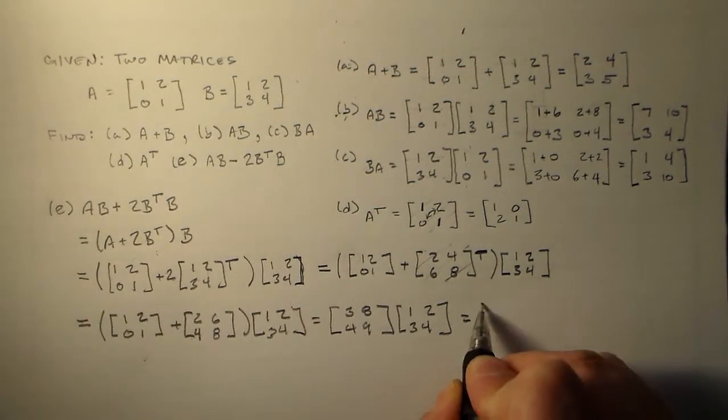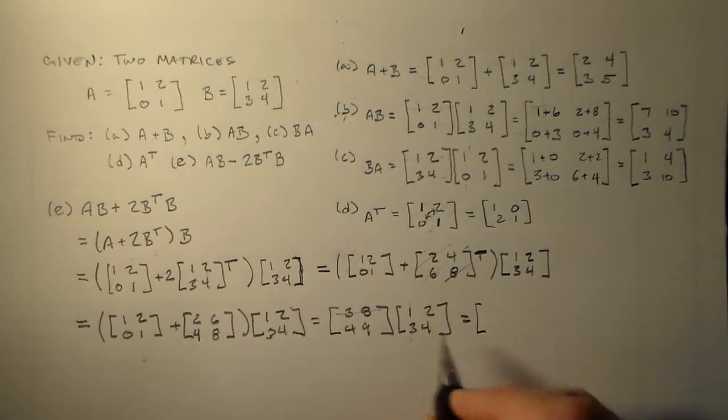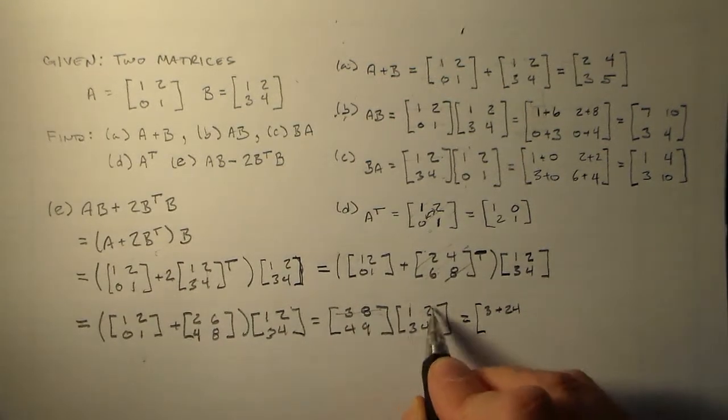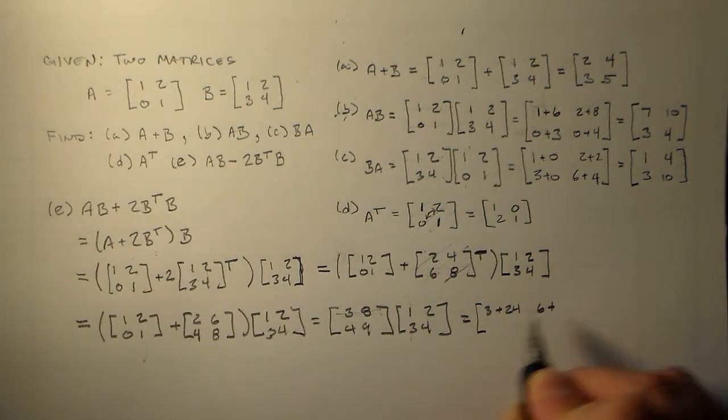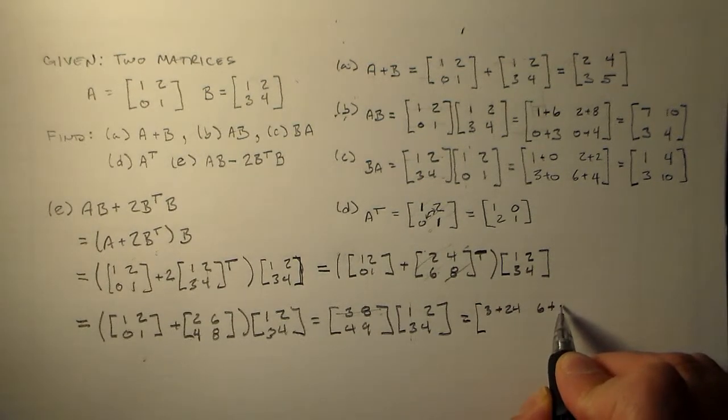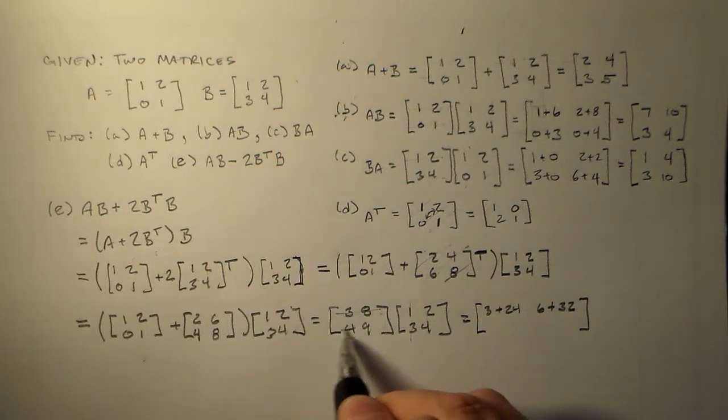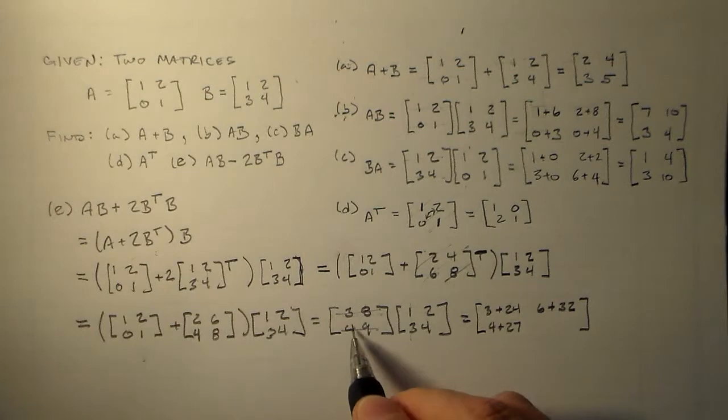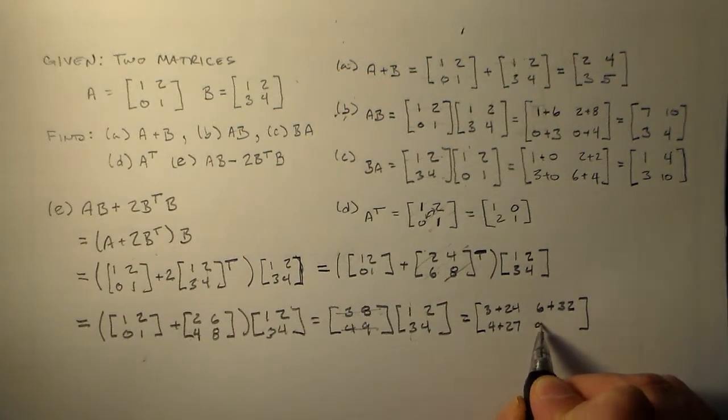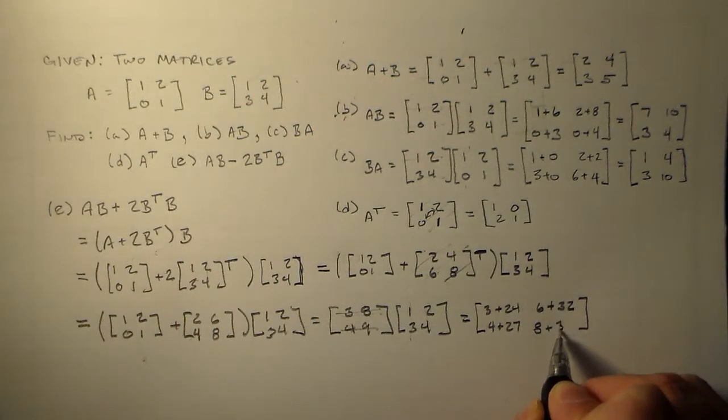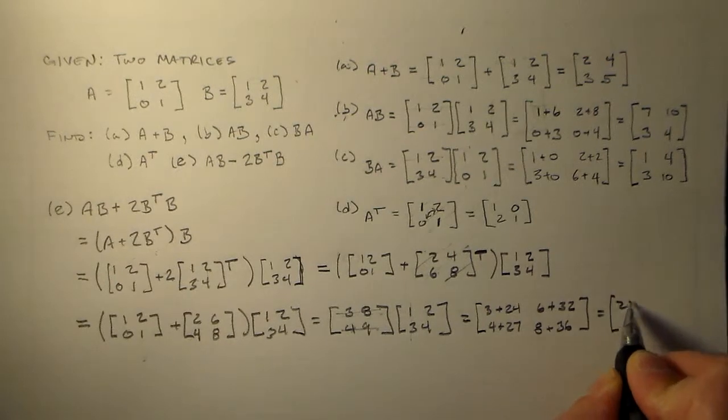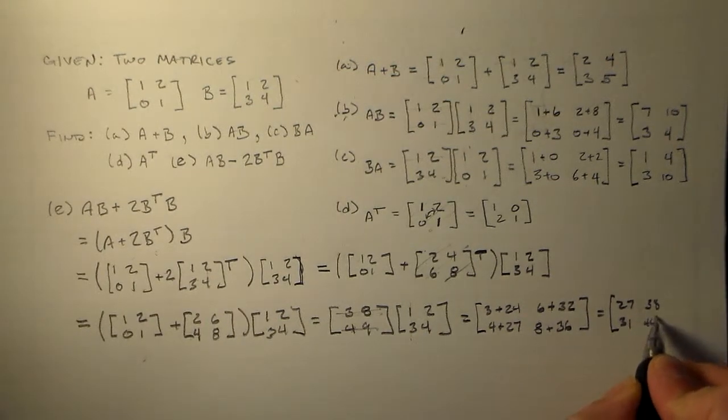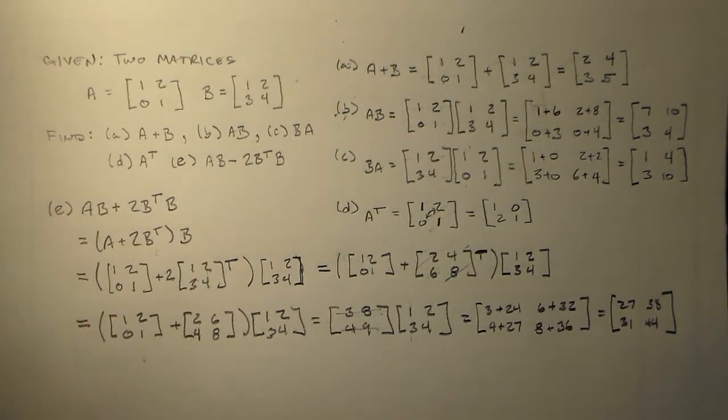So 3, 8 times 1, 3. So that's 3 times 1 is 3, plus 8 times 3, which is 24. 3, 8 times 2, 4. That's 3 times 2 is 6, 8 times 4 is 32. We're cruising. 4, 9. 4 plus 27. Then 4 times 2 is 8 and 9 times 4 is 36. So we got all this stuff. So 27, 38, 31, 44. Good stuff, don't you think? So that's all you need to do. Just throw a couple of numbers around and everything will be A-OK.